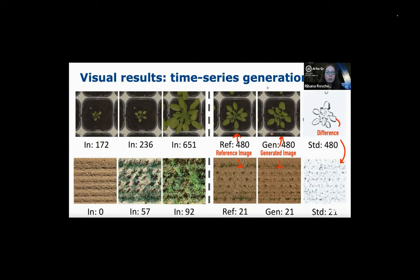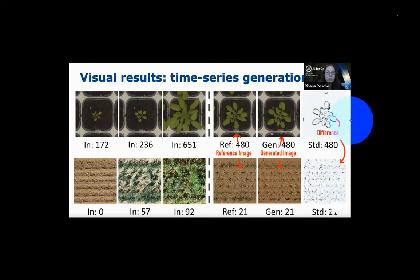Here we have the reference images and the generated images. There's a reference image for an individual plant and a reference image for the field, alongside a generated image for one of the plants and a generated image for the field — they're slightly different. In black and white you can see what those differences are. This little black halo is the difference between the reference and the generated images laid over each other.